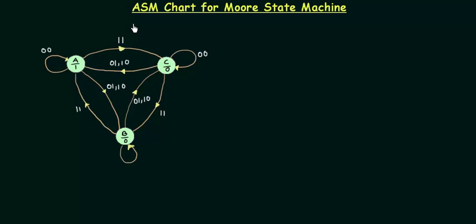In the last presentation we completed the basics of ASM chart. The ASM stands for the algorithmic state machine and we also did one example of the Mealy state machine. Now in this presentation I will solve one example of the Moore state machine, then we are done with the ASM chart. Here you can see the state diagram and as the output is written inside the state, it shows that the output is only dependent upon the present state.